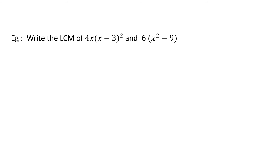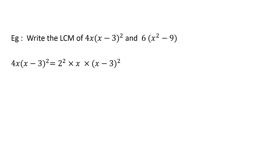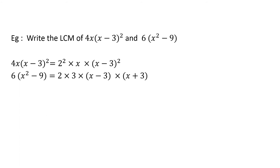Let's move on to another example: the LCM of 4x times (x minus 3) squared and 6 times (x squared minus 9). The term 4x(x minus 3) squared can be written as 2 squared into x into (x minus 3) whole thing squared. Then 6 can be factorized as 2 into 3, and x squared minus 9 is a difference of two squares, so it can be written as (x minus 3) into (x plus 3).